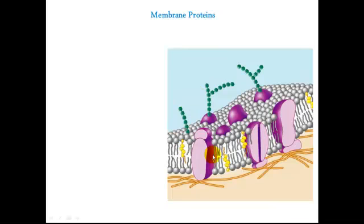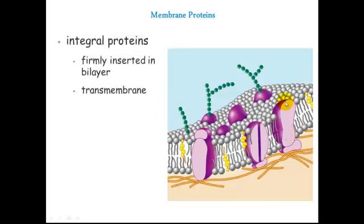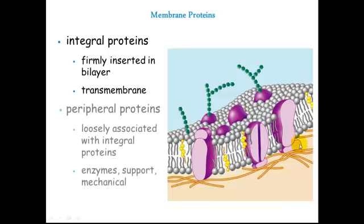The other important component to discuss are the proteins, represented by the purple blobs. We have integral proteins, which are firmly implanted within the bilayer and are usually transmembrane, meaning they cross the length of the membrane. We also have peripheral proteins, which are associated with the integral proteins and may be intra- or extracellular. These may function in support or may be enzymatic. In this dynamic structure of the plasma membrane, it's really the proteins that are doing the majority of the work.